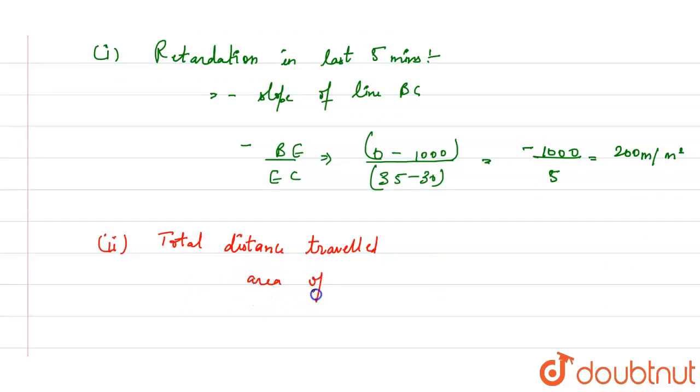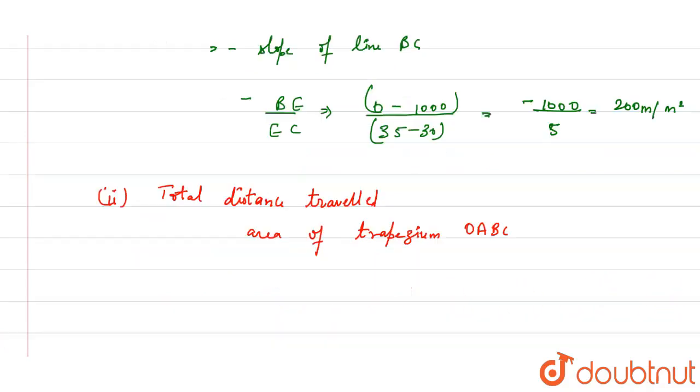Area of trapezium OABC. And this is going to be half of OC plus AB (parallel lines) multiplied by AD.